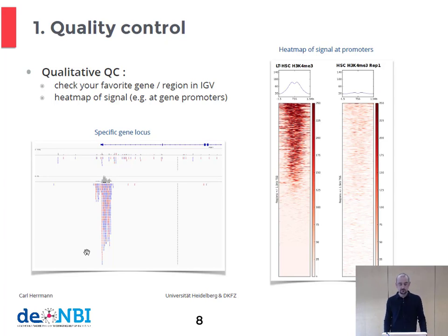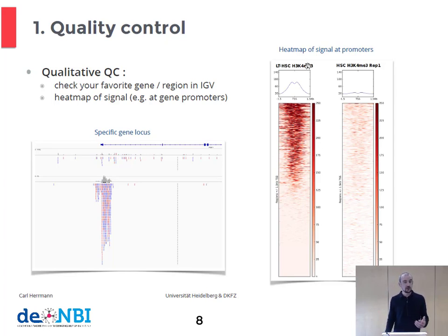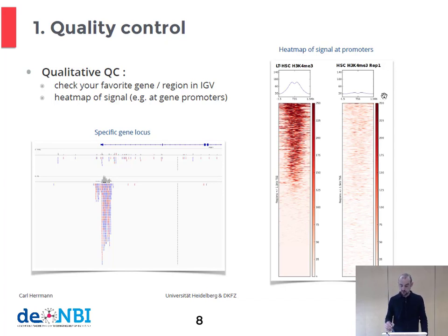Another qualitative QC could be to look at the enrichment of the signal at gene promoters. For example, if we're interested in H3K4 trimethylation, which is typically enriched at gene promoters, we would expect to see enrichment at all gene promoters. This is shown here as a heat map, where we have aligned all gene promoters, ranked them by signal strength, and we see indeed many gene promoters showing a very strong signal. On the right hand side, I've shown a case where the signal is not apparent — something hasn't worked in the experiment, and when we align all promoters, we don't see this typical enrichment.